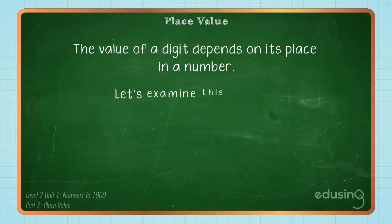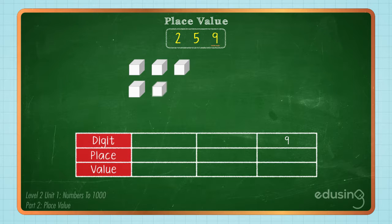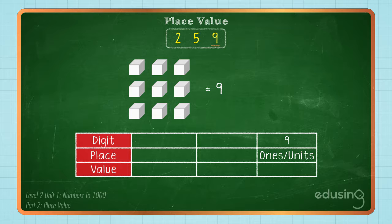For example, look at this number. The digit 9 represents the number of cubes. It is in the ones or units place and has a value of 9.